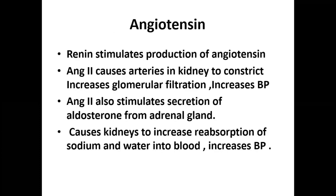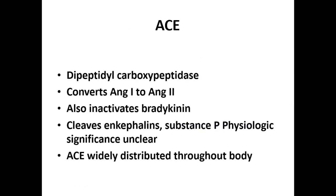Renin stimulates the production of angiotensin, and angiotensin 2 causes arteries in the kidney to constrict, increasing glomerular filtration and blood pressure. Angiotensin 2 also stimulates secretion of aldosterone from the adrenal gland, causing the kidney to increase reabsorption of sodium and water, further raising blood pressure. ACE (angiotensin converting enzyme) is a dipeptidyl carboxypeptidase that converts angiotensin 1 to angiotensin 2 and also inactivates bradykinin. It is widely distributed throughout the body.